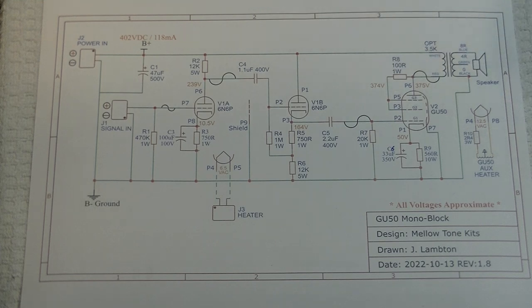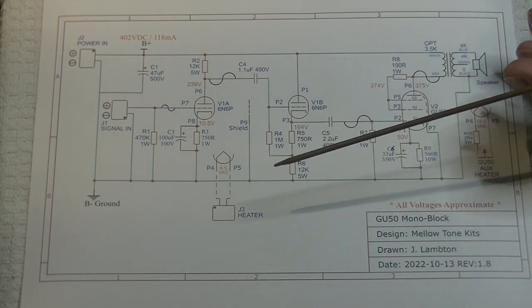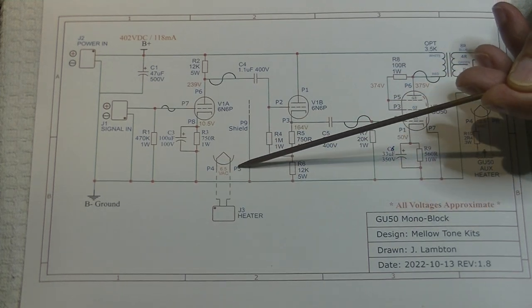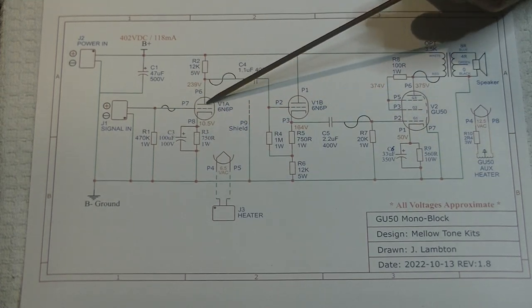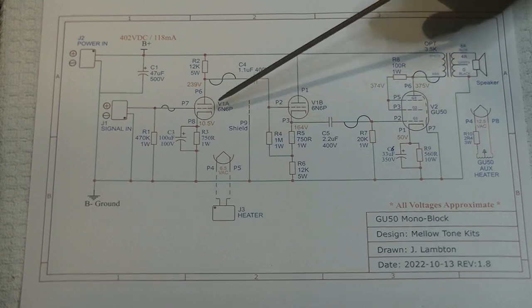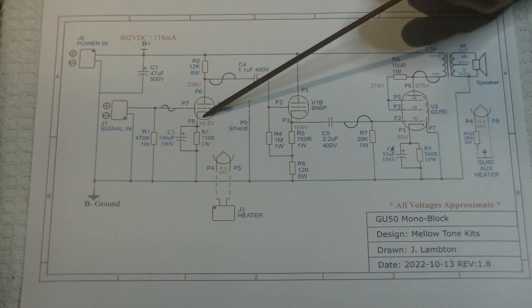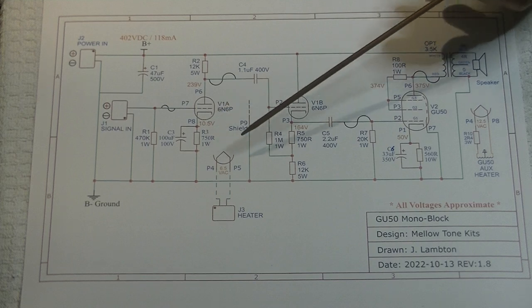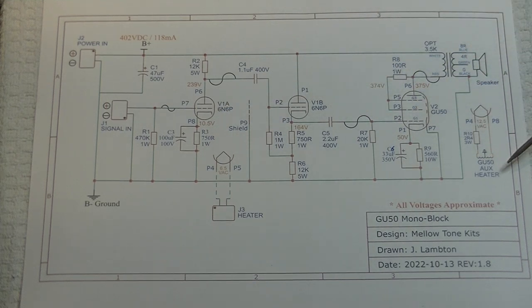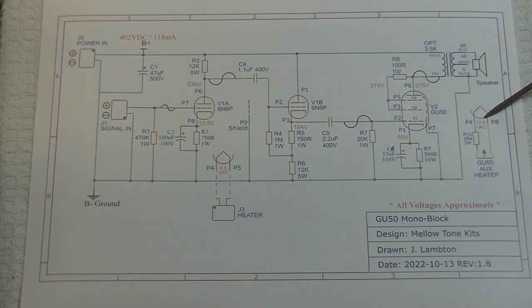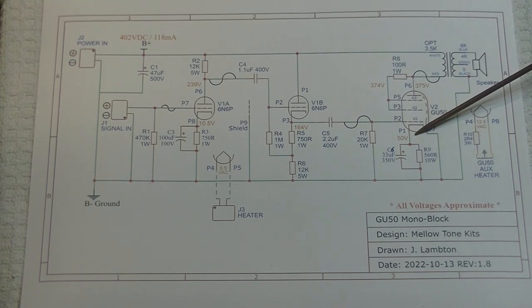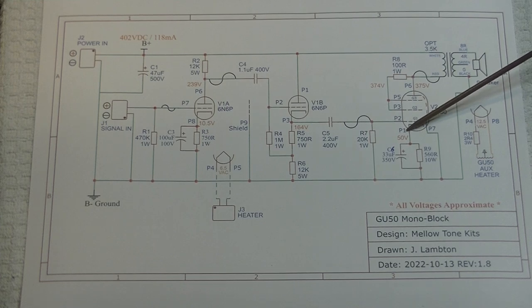So let's start with the heater supply, or the filament supply. So we're going to have 6.3 volts heating up the driver stage, the 6N6P, and the filament is shown down here, but of course, the cathode wraps around it. We're going to look at that in a minute. And over here, we've got the auxiliary supply for the power tube, the GU50, and that's a nominal 12.6 volts, and again, it would heat up the cathode here.